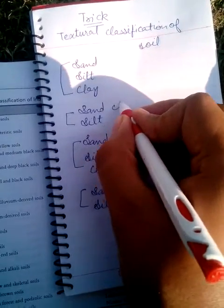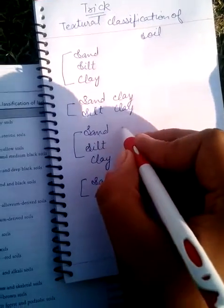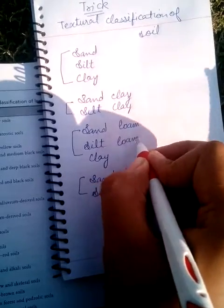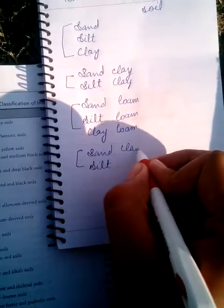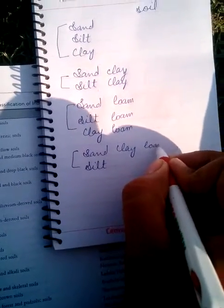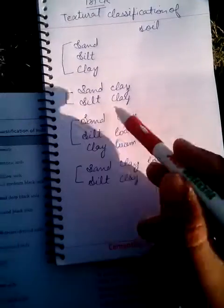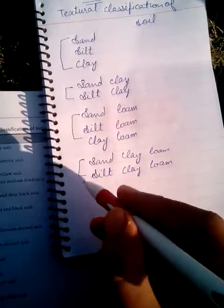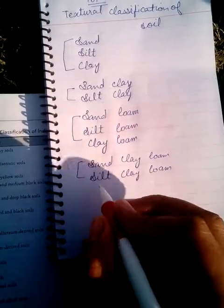In these two we have to write clay, clay. In these three we have to write loam, loam, loam. In these two you have to write clay, loam, clay, loam. So in this way your 10 classes are covered. The last two classes are also very easy.